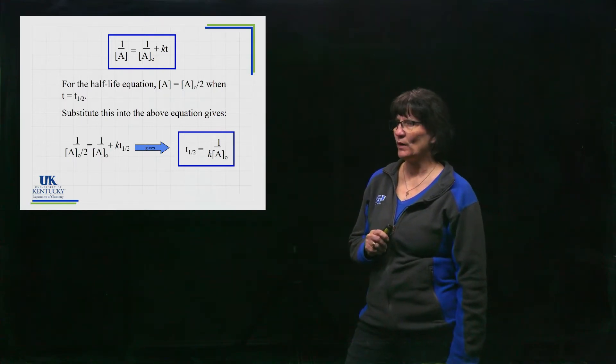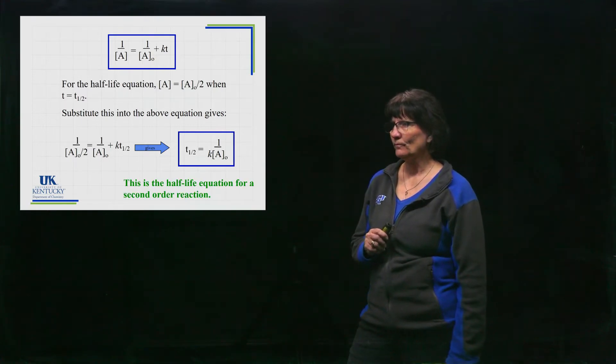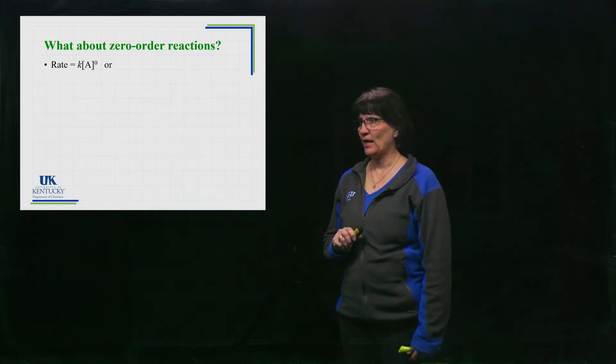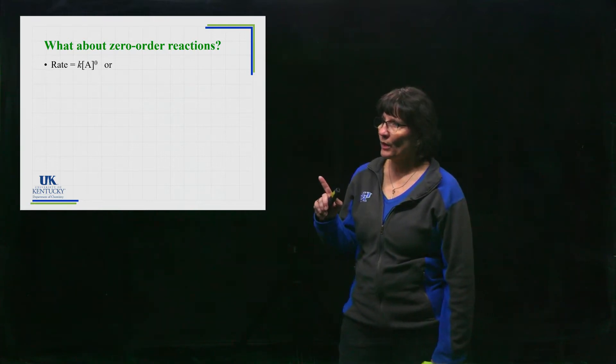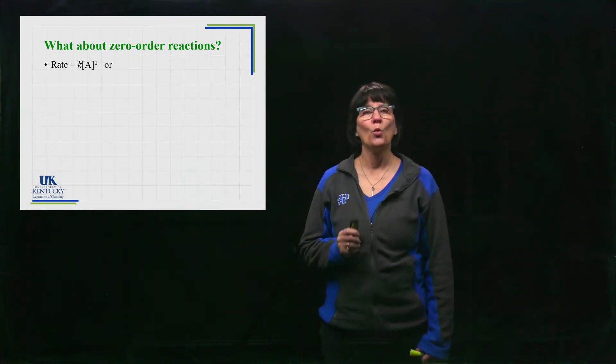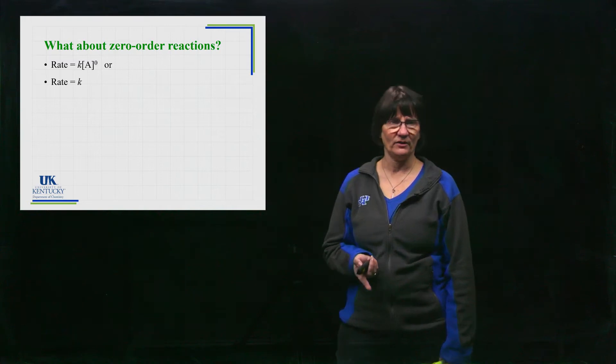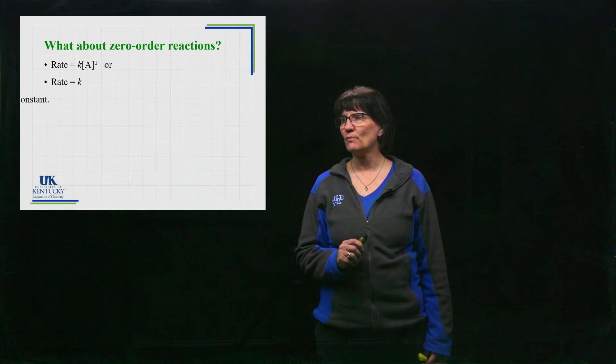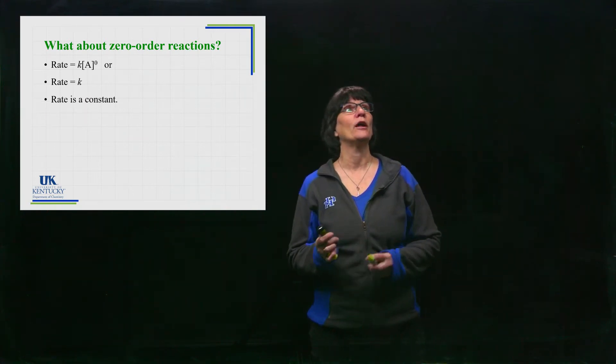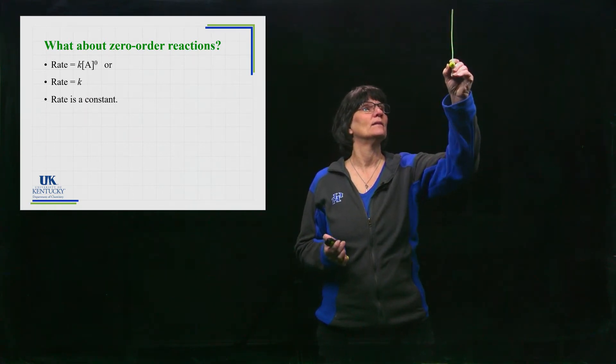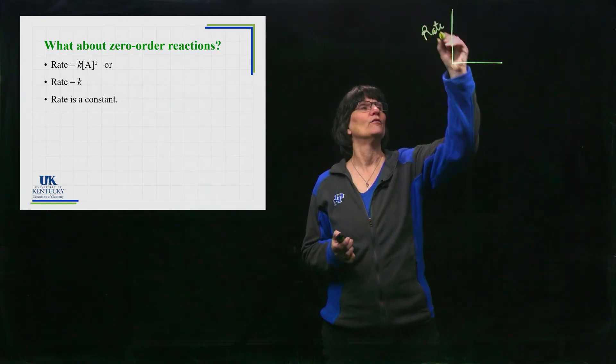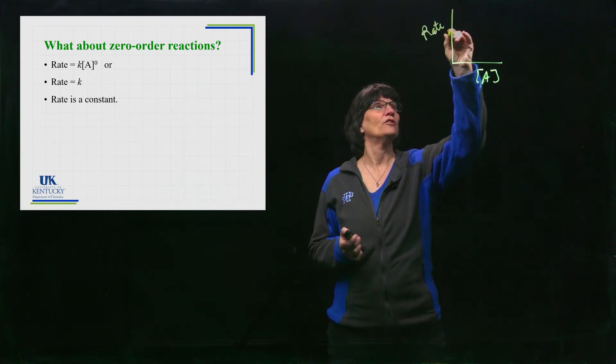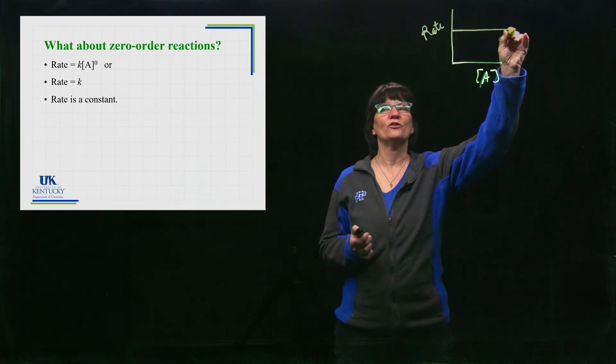Now we're not going to plot it out, but that is the half-life equation for that. All right, let's just mention a zeroth-order reaction. If it's zeroth order, A is raised to the zero power, which tells me that the rate is a constant. It runs at a constant rate.